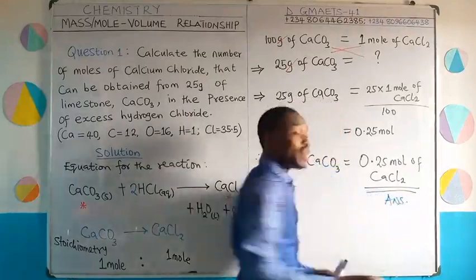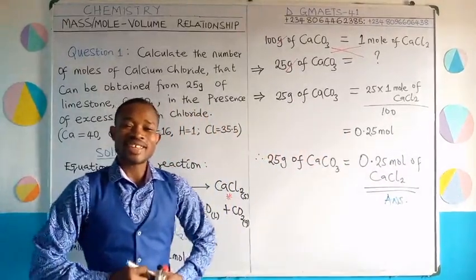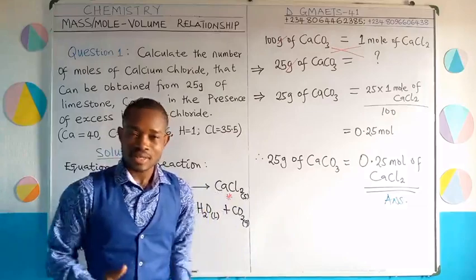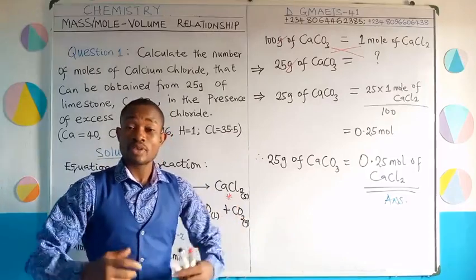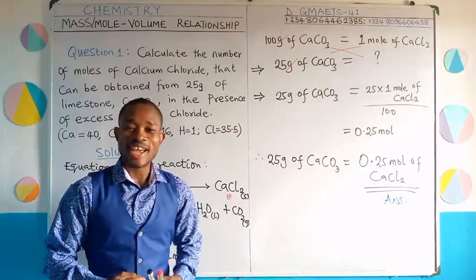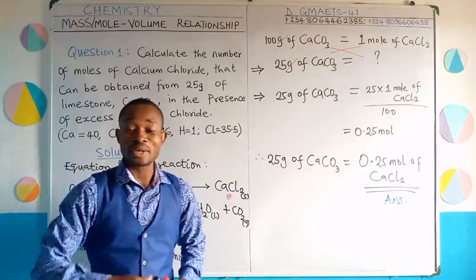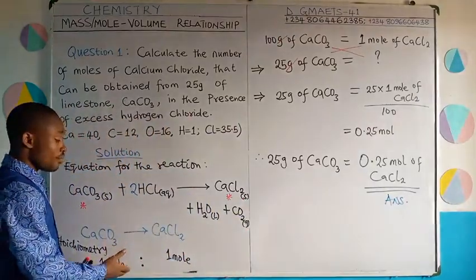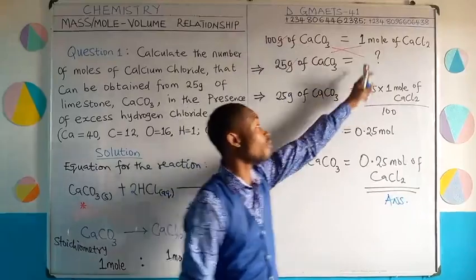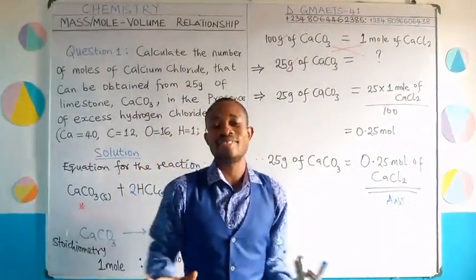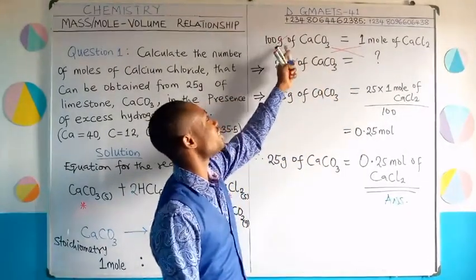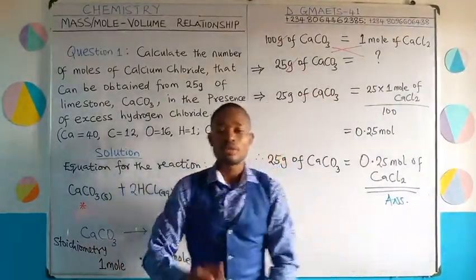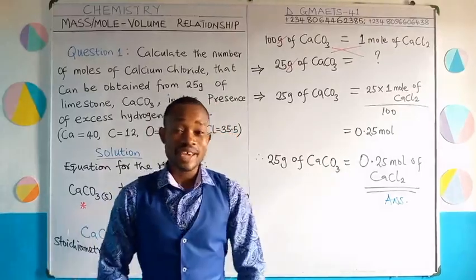This calculation is simple — just like saying: if 1 biscuit sells for 10 naira, then 3 biscuits cost 30 naira. The principle is: if this standard is established, what will the other value be? From the stoichiometry, 100 grams of calcium carbonate gives 1 mole of calcium chloride as a standard. Therefore, 25 grams gives us 0.25 moles by cross-multiplication. Simple.